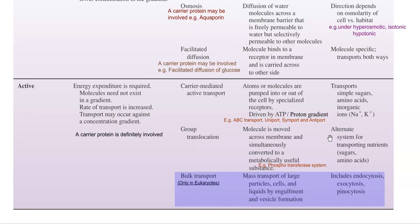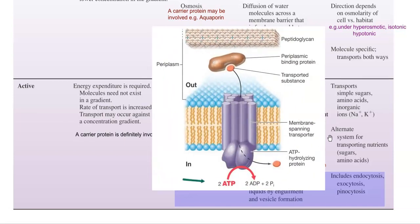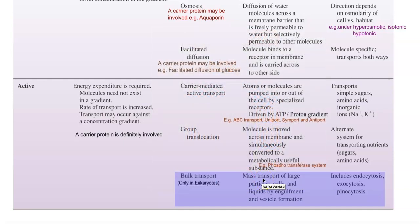Atoms or molecules are pumped in or out of the cell by specialized receptor proteins embedded in the membrane. Energy is provided as ATP in the ABC transport system — ABC stands for ATP-Binding Cassette proteins involved in nutrient transport. The uniport, symport, and antiport mechanisms operate when a proton gradient is established. Collectively, these systems transport simple sugars, amino acids, and inorganic ions such as sodium and potassium.